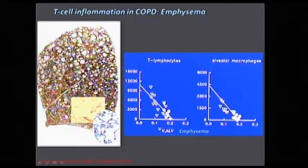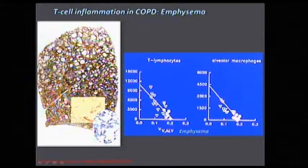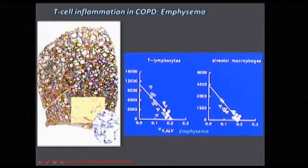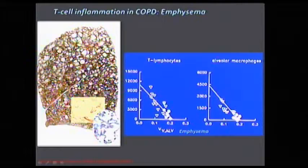There is another extremely important component: emphysema. The emphysema of the lung has an important component because it provides the elastic recoil — the pressure that we need in order to empty the lung. We have shown many years ago that if you quantify emphysema — expressed as the volume of alveolar wall — the number of T cells per cubic millimeter is extremely high and increases linearly with the amount of emphysema, as do macrophages. So there is also a relation between these lymphocytes and the loss of lung tissue with emphysema.